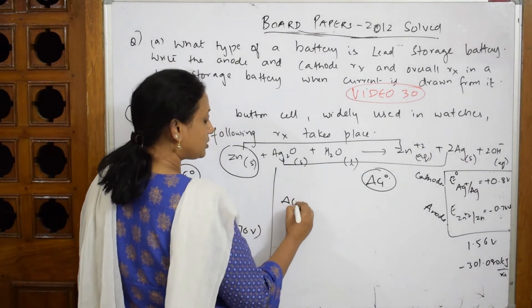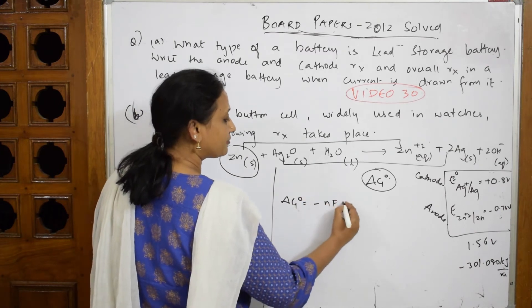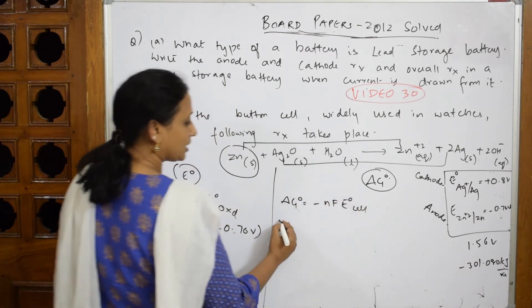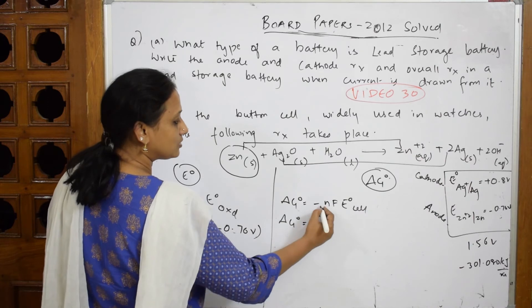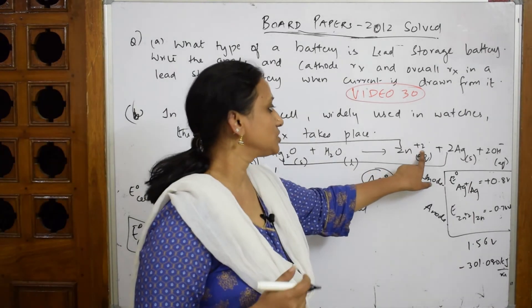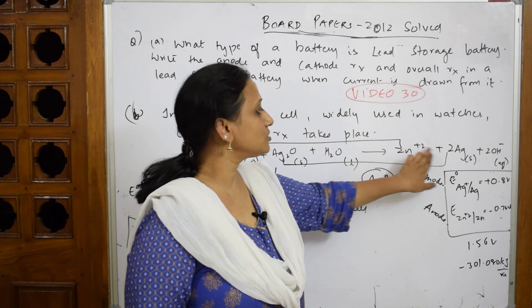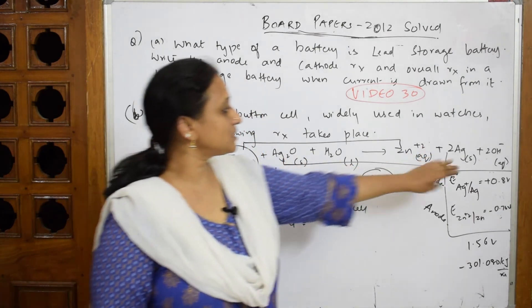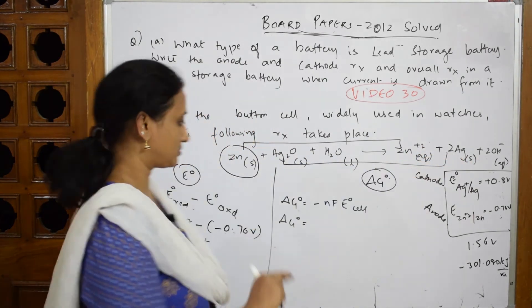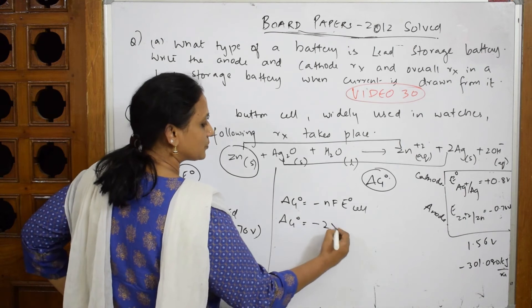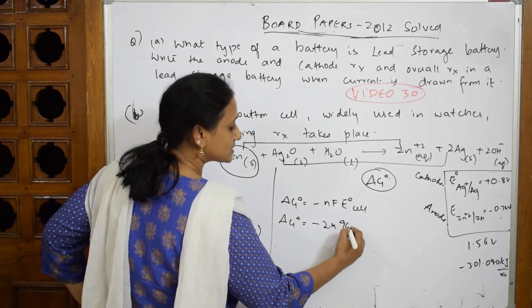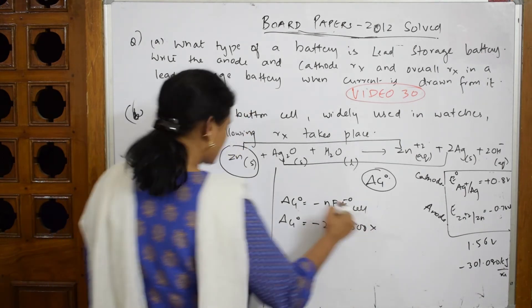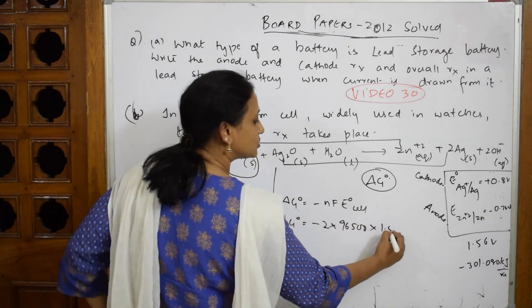Now according to this, ΔG° naught is equal to -nFE° cell. ΔG° is equal to -n. How many electrons are transacted? Two - two here. See, from zinc two electrons, silver has accepted and become two silver, means two electrons.